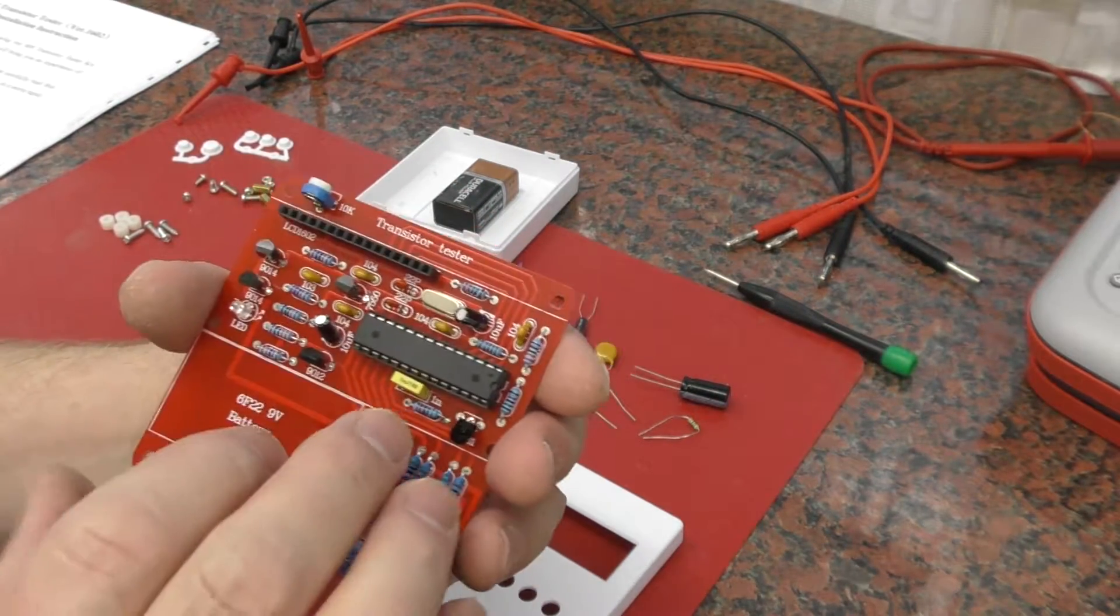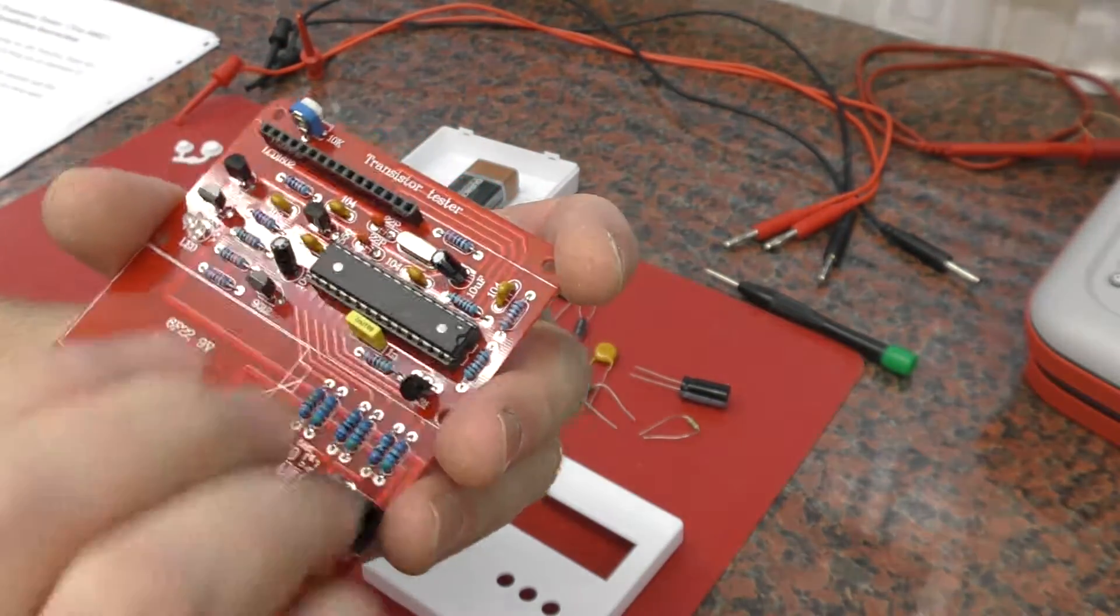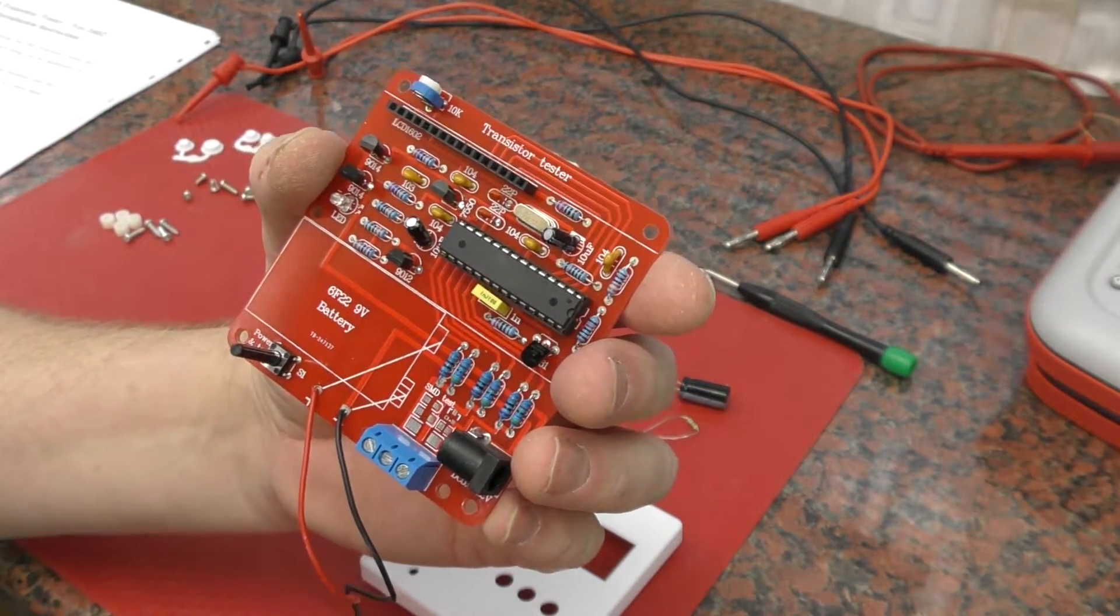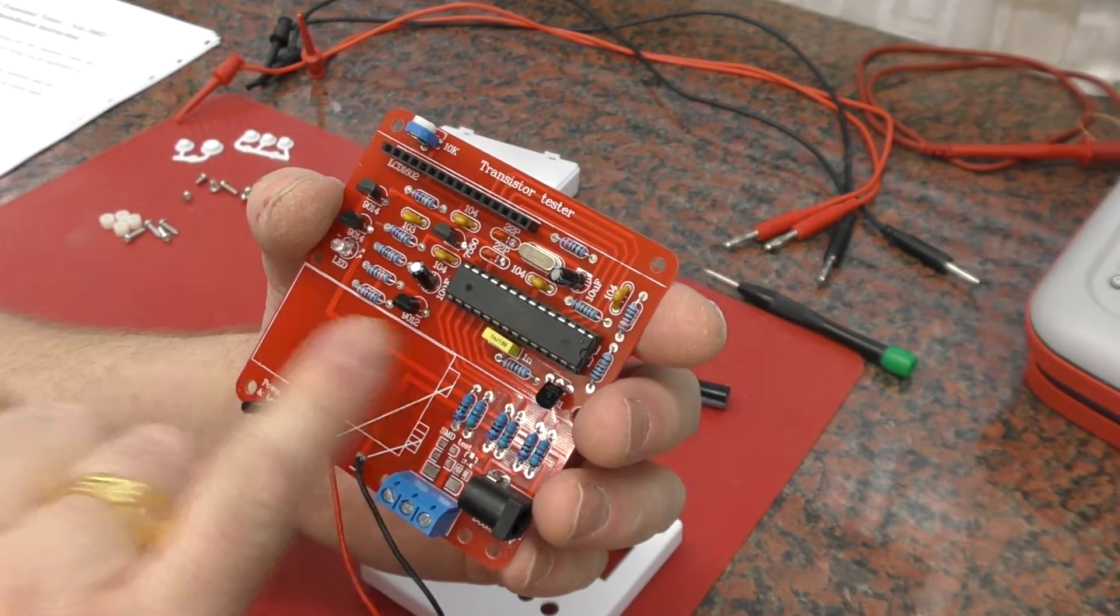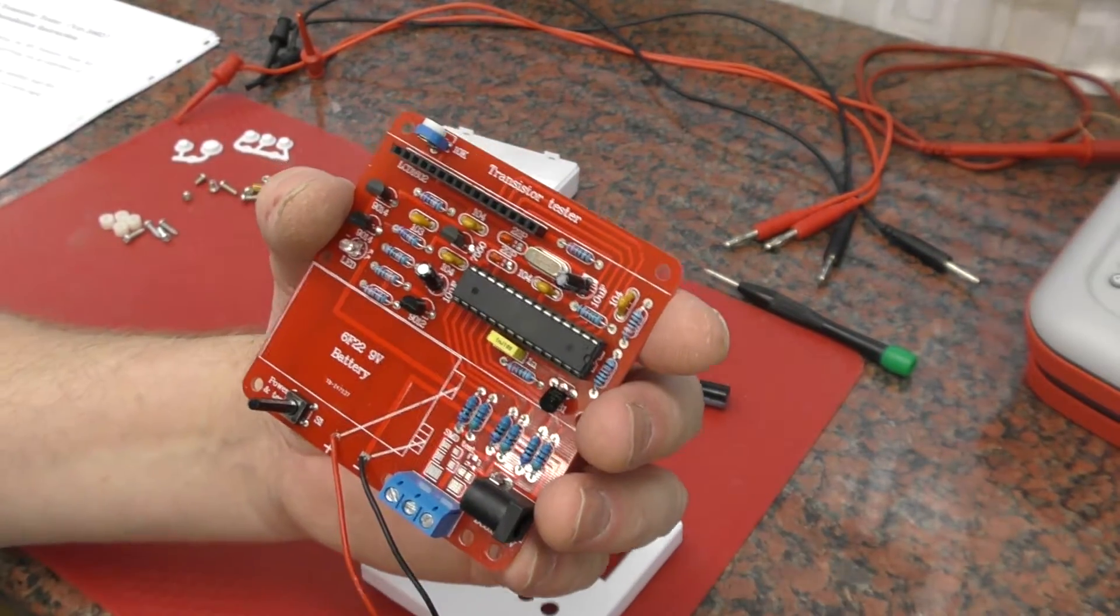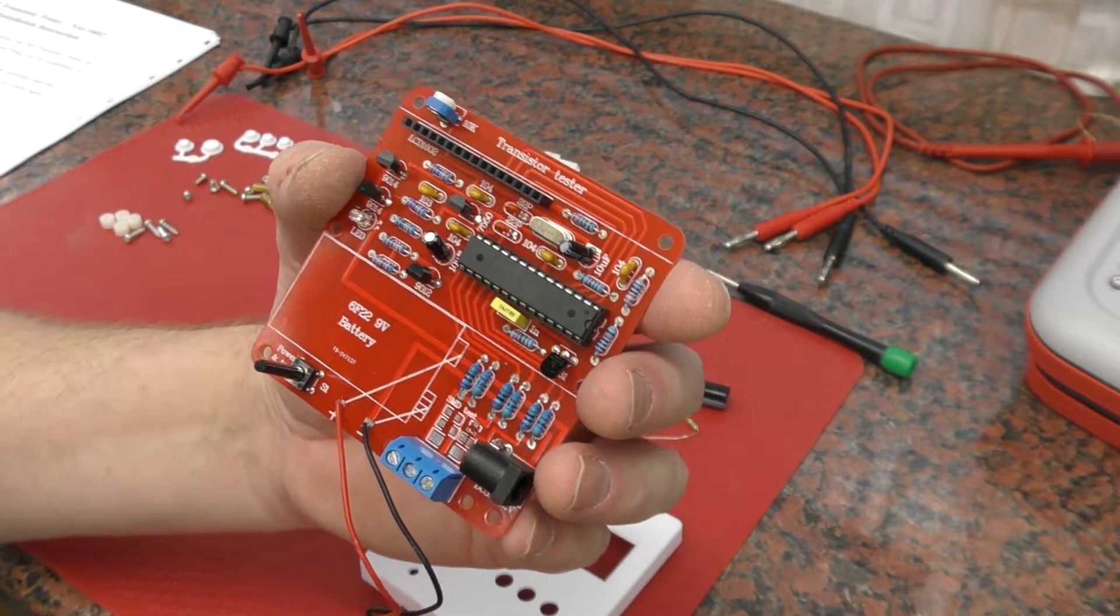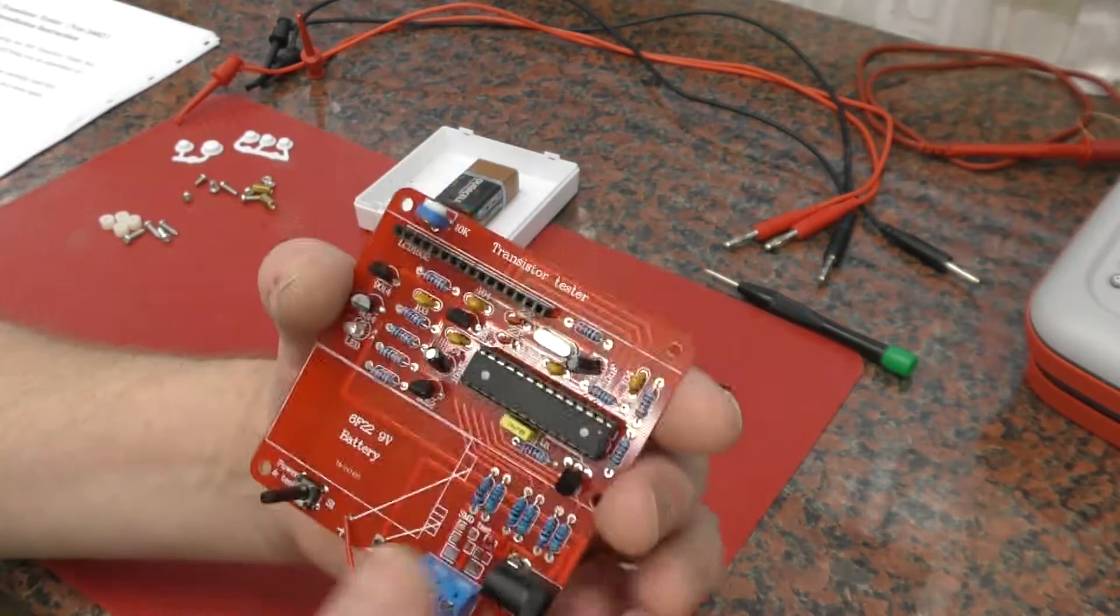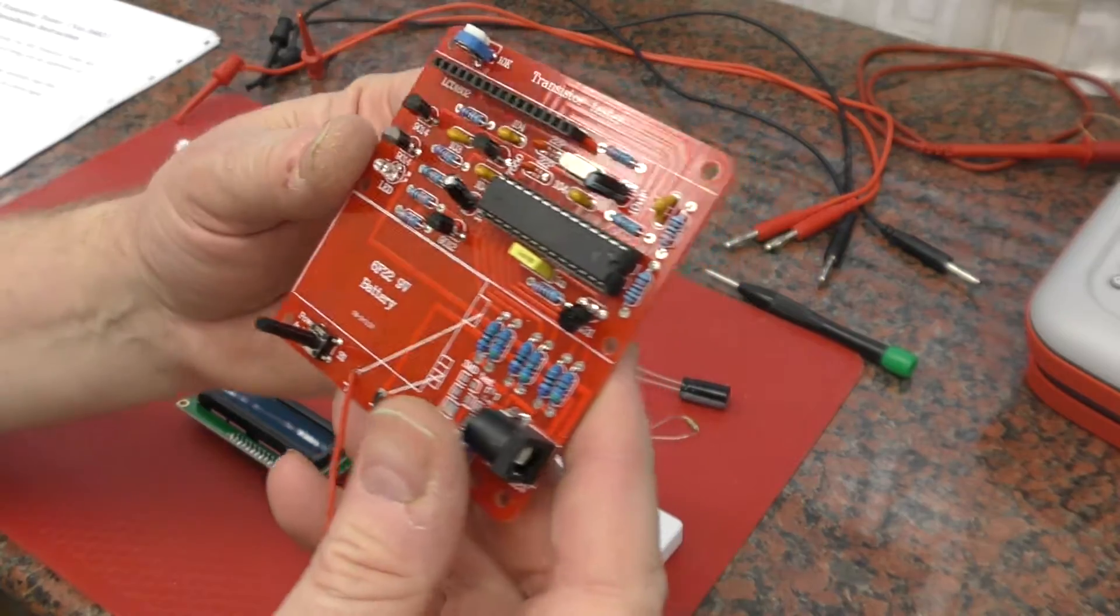It's an ATmega328 and it's socketed, so you can just pop the socket in first. It gives you a couple of test points. You can connect it up to the DC power supply or your battery, and there's some test points where you can check for various voltages before you actually insert the processor, so you can check that it's working correctly and you haven't made any mistakes. After that, unplug it, insert the processor, pop the display on, and you're good to go with the very simple setup procedure.